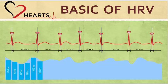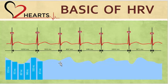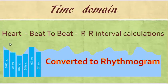When we record electrocardiogram signals, the computer will help us to calculate the normal-to-normal R wave. It is then transferred into the rhythmogram, which represents the RR interval in its different variation. This is how we build up a normal waveform rhythmogram — the heart beat-to-beat RR interval is calculated and converted into the rhythmogram.